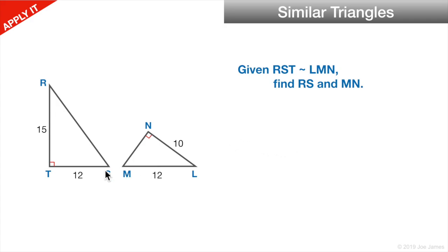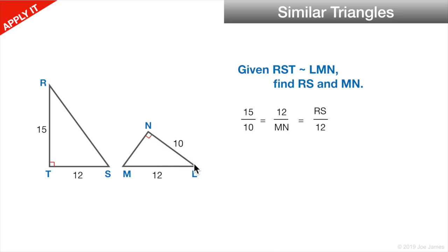Let's try a sample problem. Here we have two similar triangles — let's find RS and MN. We can do this using the similarity ratios. Given that they're similar, we know that 15, which is the longest leg of this triangle, is proportional to the 10 of NL. So 15 over 10 is our similarity ratio, and we have the same ratio for TS (which is 12) over MN, the shorter leg. That's also equal to the ratio for the hypotenuse: RS over ML, which is 12.